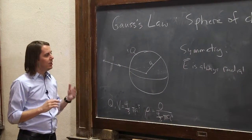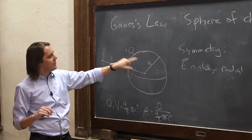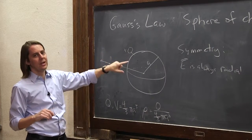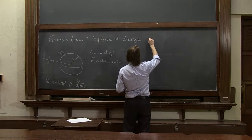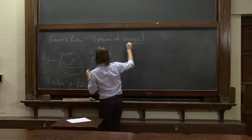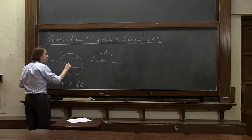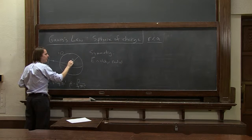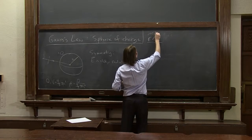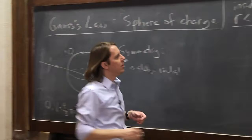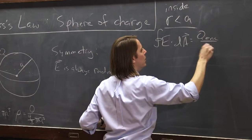Now we're going to use Gauss's law to figure out what the electric field is. We have two special regions: since we have a volume charge density, we can be inside the charge or outside it, and we solve those separately. Let's do R less than A — that's the region inside the sphere. Applying Gauss's law: the integral of E dot dA equals Q enclosed over epsilon naught.